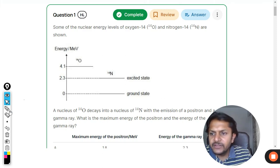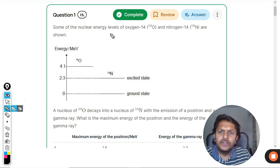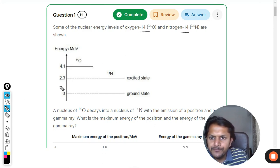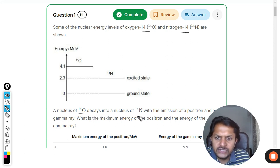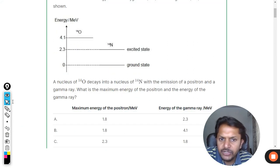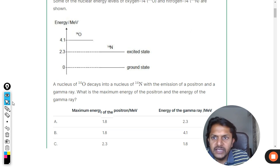Let's see what is in this question. Some of the nuclear energy levels of oxygen and nitrogen are shown. The nucleus of O-14 decays into the nucleus N-14 with the emission of the positron and gamma radiation. What is the maximum energy of the positron and the energy of the gamma rays?